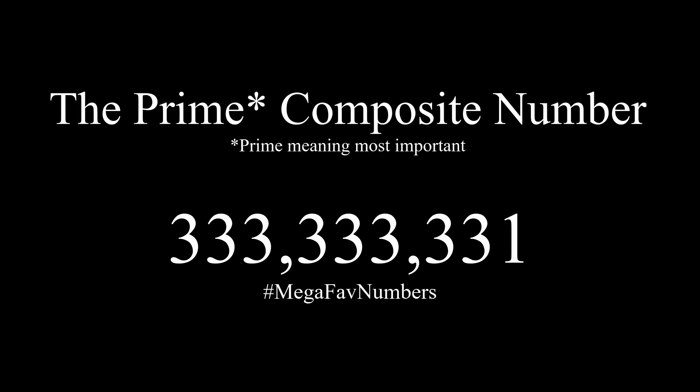333,333,331. This is my favorite number greater than 1 million, which I have dubbed the prime composite number. The prime composite number is so great because it picks apart a pattern of prime numbers. Here's what I mean.